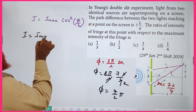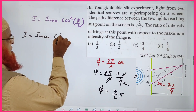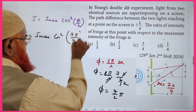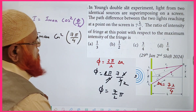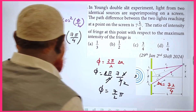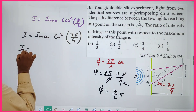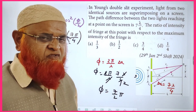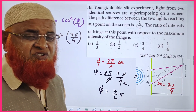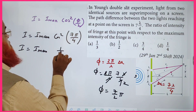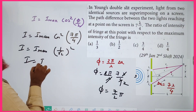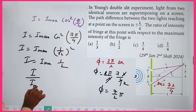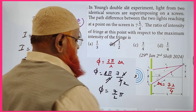Using I = I_max·cos²(φ/2): cos²(7π/4) = cos²(7π/4). Since 7π/4 = (2π - π/4), this equals cos²(π/4) = (1/√2)² = 1/2. Therefore I/I_max = 1/2.